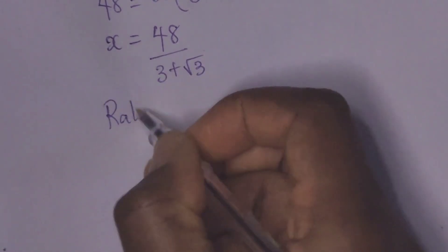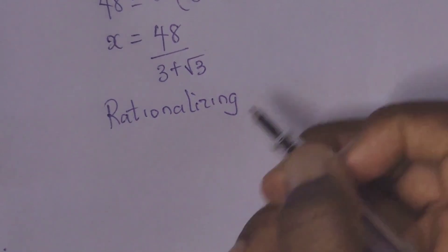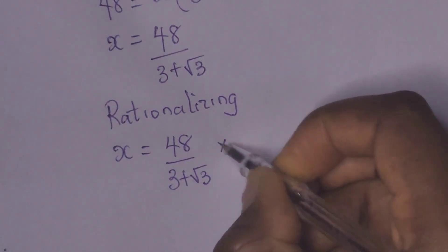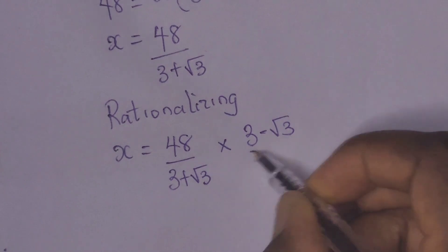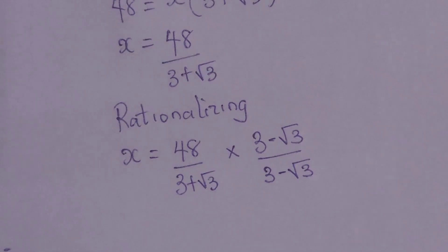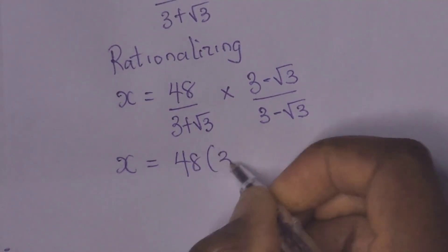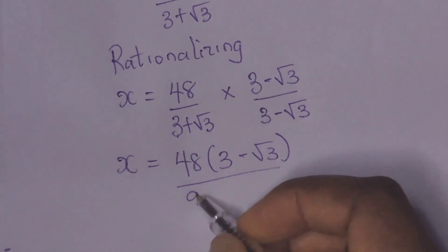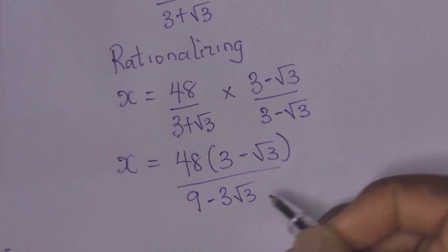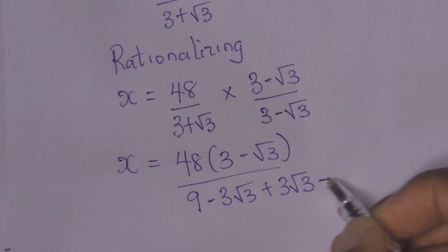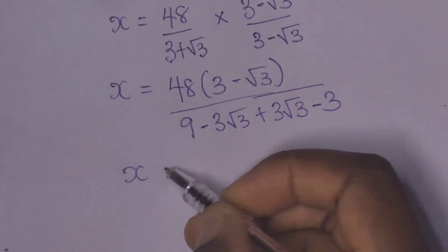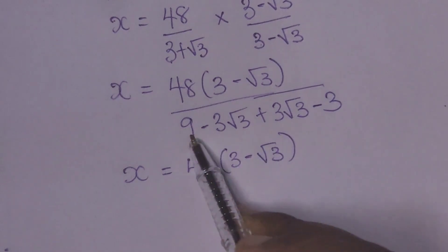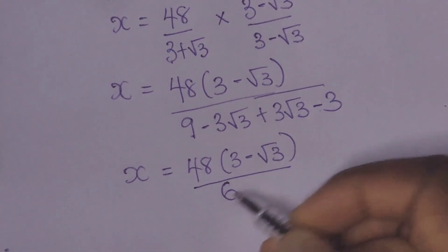To make x the subject, we have x equal to 48 over (3 plus root 3). From here we can rationalize. We have x equal to 48 over (3 plus root 3), times (3 minus root 3) over (3 minus root 3). So we have x equal to 48 times (3 minus root 3) over: 3 times 3 is 9, minus 3 root 3, plus 3 root 3, minus 3. Those middle terms cancel out.